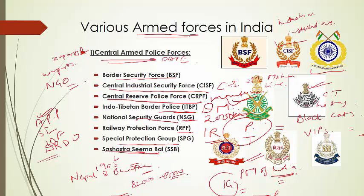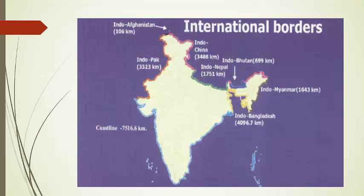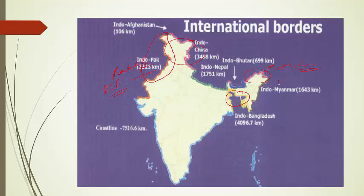To demarcate which forces cover which borders: the Indo-Pakistan border and India-Bangladesh border are safeguarded by the BSF — Border Security Force. The India-China border in Jammu-Kashmir, Himachal Pradesh and Arunachal Pradesh along the McMahon Line is safeguarded by ITBP — Indo-Tibetan Border Police. The Indo-Nepal boundary in UP, Bihar, Uttarakhand, and the Bhutan border in West Bengal and Assam are safeguarded by SSB. Assam Rifles is responsible for protecting the Indo-Myanmar border, though recently there have been talks of subsuming Assam Rifles under BSF.